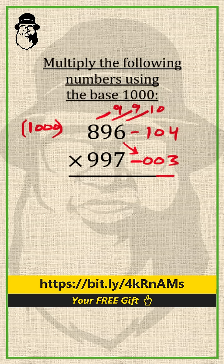You can do it like this: 896 minus 3. It will be 893. Or we can do 997 minus 104. We can get this same result, 893.